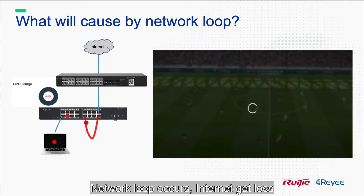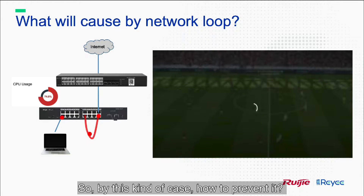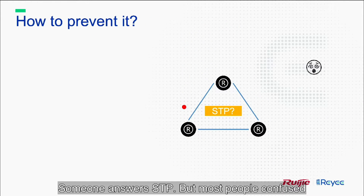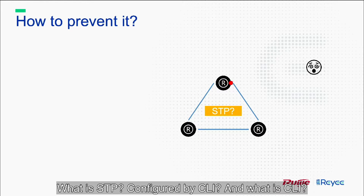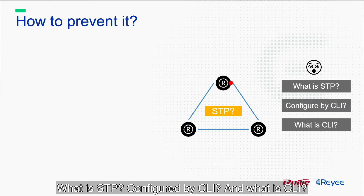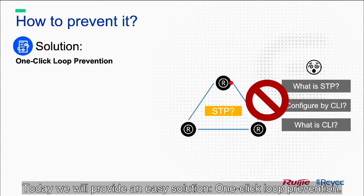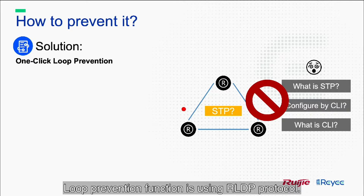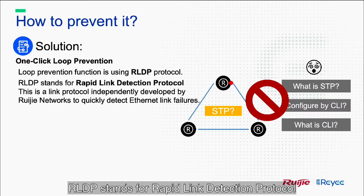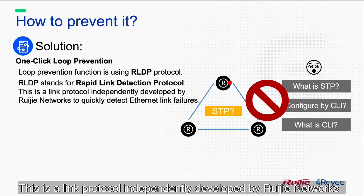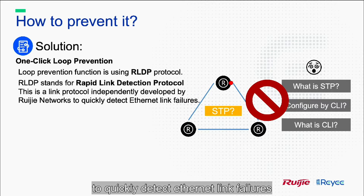Network loop occurs, internet gets lost and CPU usage becomes very high. So, how to prevent this kind of case? Someone answered STP, but most people are confused — what is STP? Configured by CLI, and what is CLI? Today, we will provide an easy solution: one-click loop prevention. The loop prevention function uses RLDP protocol. RLDP stands for Rapid Link Detection Protocol, a link protocol independently developed by Ruijie Networks to quickly detect Ethernet link failures.